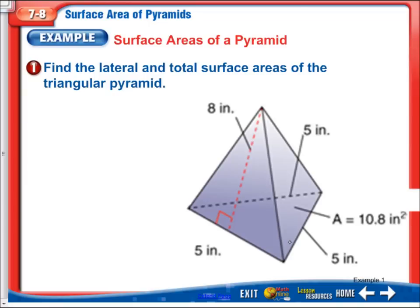All right, so it says find the lateral and total surface areas of the triangular pyramid. We'll just go ahead and start to find the total surface area. So we need to find the perimeter. So we'll do one half of the perimeter times slant height plus the area of the base. Notice, again, we only have one base. So surface area is going to be half.